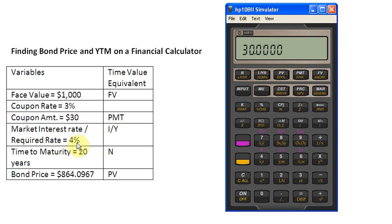Then 4% is my market interest rate or required rate of return which I'm going to use for discounting purposes. So, I'm going to enter a 4 here and then store it into the I slash YR key here.